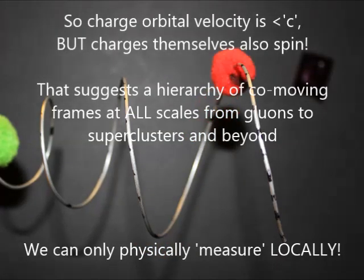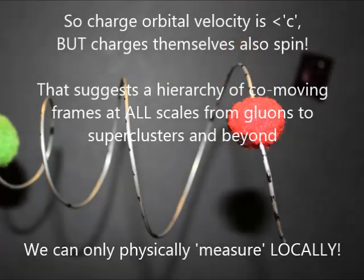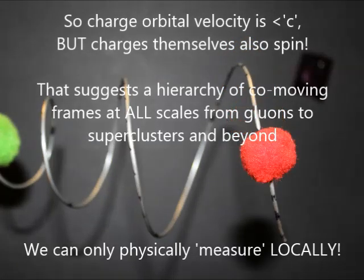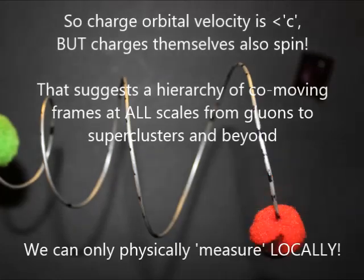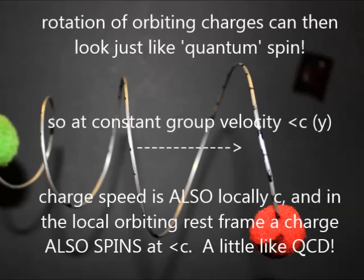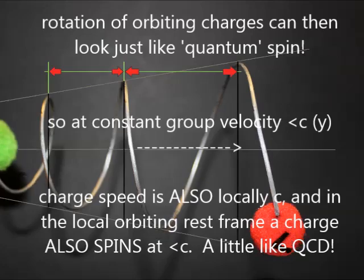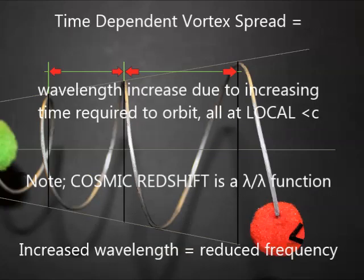So charge path orbital speed limit is c. But then charges themselves also spin. The hierarchy of co-moving frames emerges at all scales, gluons to super clusters. We can only physically measure locally. Rotation of orbiting charges can then look just like quantum spin. So at constant group velocity up to c, charge speed is also local c. And in the local orbiting rest frame the charge also spins at c, as in QCD.